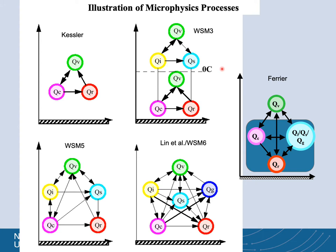In WSM-3 there is immediate freezing or melting as the air goes through the zero-degree level. There are some limitations on what these kinds of schemes can do with only three arrays, but it's mainly to save memory. The next level of sophistication is a five-species array called WSM-5, where ice, cloud, rain, and snow are now separate arrays, giving five total species including vapor, with interactions between them as shown by the arrows.